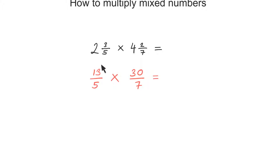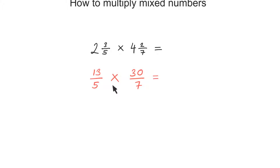Now that I have written these as improper fractions, all I need to do is just multiply these two fractions. When we are multiplying fractions, it's just the numerator times the numerator, the denominator times the denominator — top times the top, bottom times the bottom. 13 times 30: 10 times 30 is 300, 3 times 30 is 90, so that becomes 390 on top.